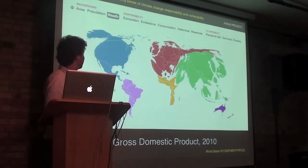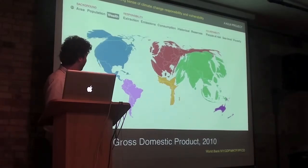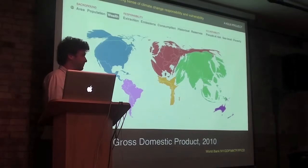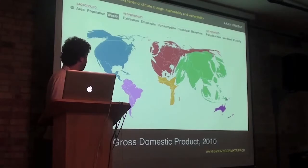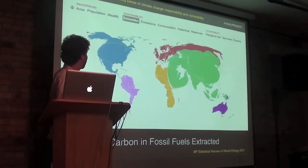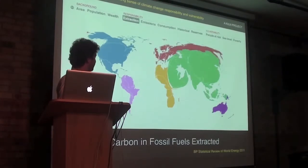And then this is the global domestic product of the different countries of the world — that's the amount of wealth created domestically by activity that happens within the individual countries.